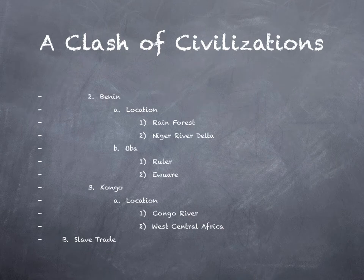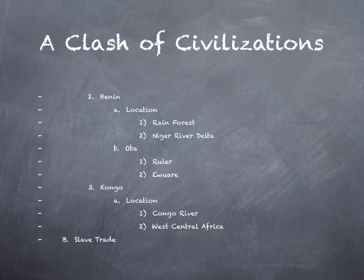The civilization of Benin developed in the rainforest down by the Niger River Delta — actually one of the few civilizations historically that developed in a rainforest, presenting unique challenges. Their rulers were known as Obas, a title similar to king. Their most successful Oba was Iwari, who brought the civilization of Benin to its highest point. The Congo civilization was located along the Congo River in west central Africa. Many of these civilizations that encountered the Europeans were along the western coast of Africa. By far and away, the most significant thing defining the relationship between the Europeans, the Americas, and the Africans was the slave trade.